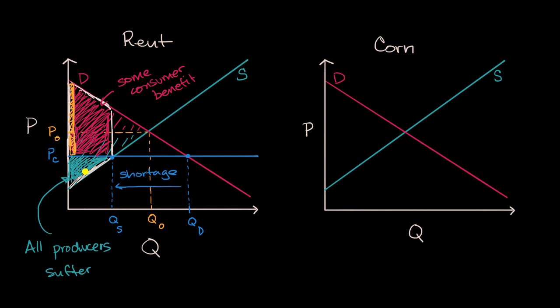In broad brush terms: you put in a price control — in this case, a price ceiling — you're going to create a shortage. All the producers are going to suffer. Some of the consumers benefit according to this model, but not all of them, because not all of them are now going to be able to get a place to rent.